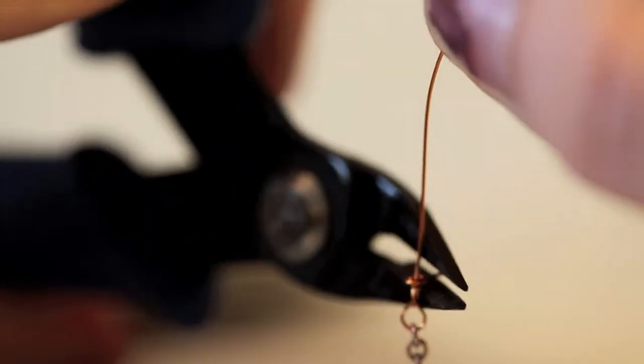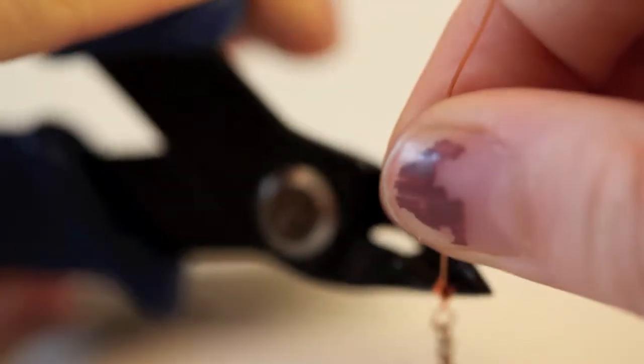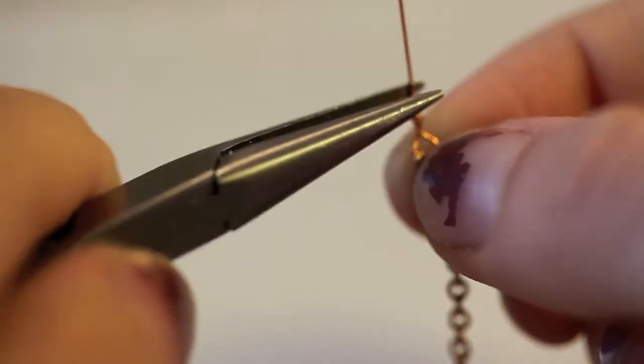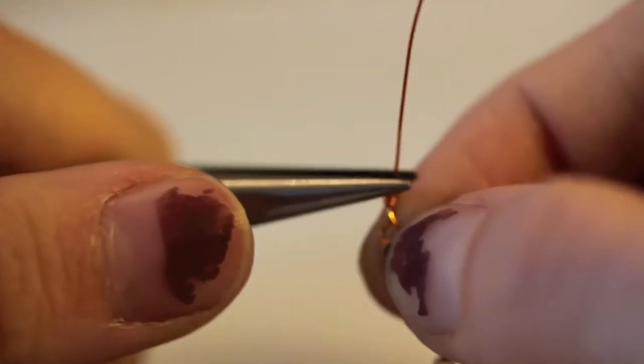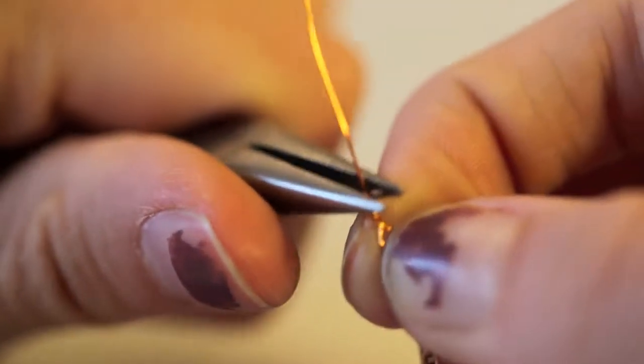Use wire cutters to cut off the excess of the short piece of wire. Gripping wire loop between thumb and forefinger or with round nose pliers, use the flat nose pliers to flatten down the tail of the short piece of wire. This may be best achieved by using the very tip of the flat nose pliers.